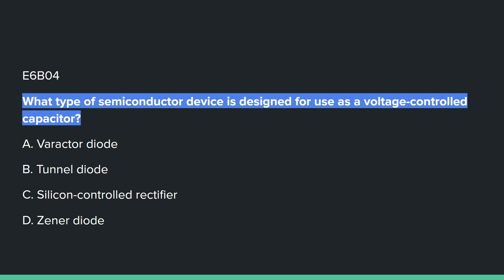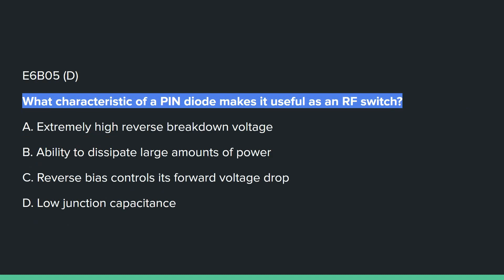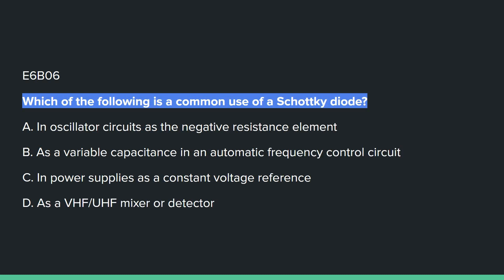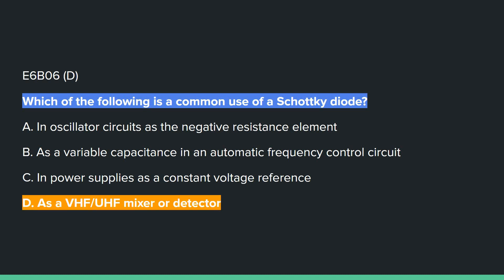E6B04: What type of semiconductor device is designed for use as a voltage controlled capacitor? A, varactor diode. E6B05: What characteristic of a PIN diode makes it useful as an RF switch? D, low junction capacitance. E6B06: Which of the following is a common use of a Schottky diode? D, as a VHF/UHF mixer or detector.